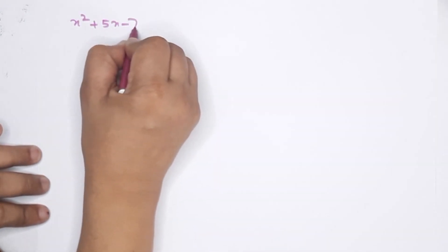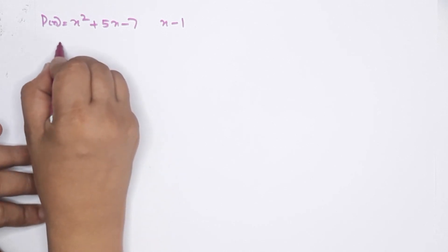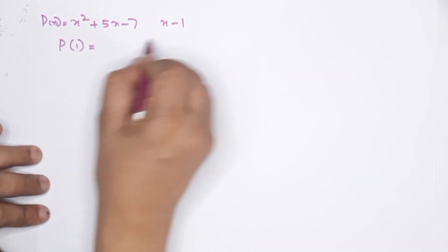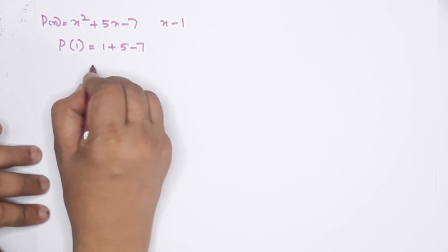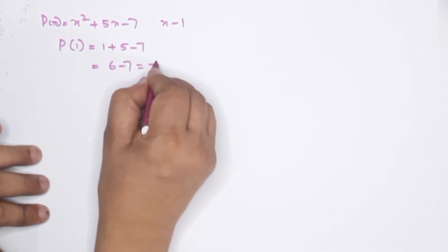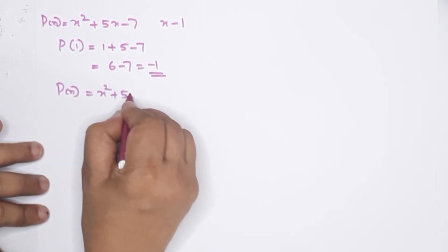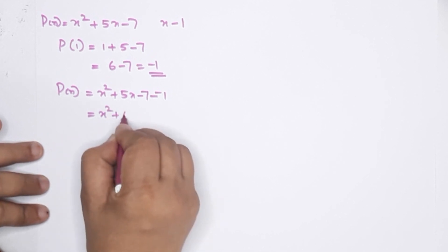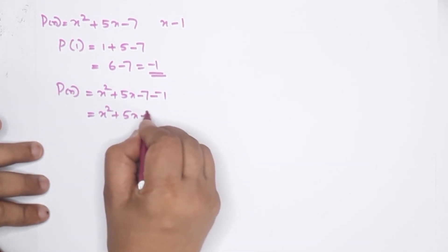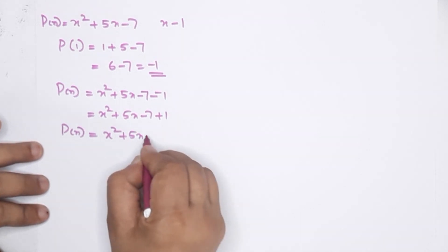The third question: x squared plus 5x minus 7, and one factor is x minus 1. What should you subtract from this polynomial? I will find P of 1: 1 plus 5 minus 7 equals 6 minus 7, that means minus 1. So we subtract minus 1 from the polynomial: x squared plus 5x minus 7 minus negative 1, giving x squared plus 5x plus 1 minus 7 plus 1, which is x squared plus 5x minus 6.